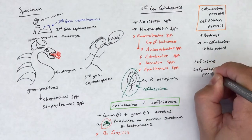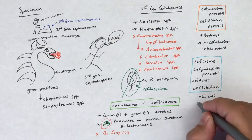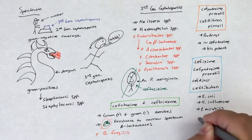Cefpodoxime, cefpodoxime proxetil, ceftanir, and ceftibutin are active against E. coli, H. influenzae, P. mirabilis, and S. pyogenes.